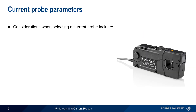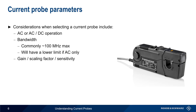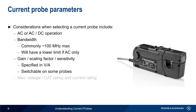There are several considerations when selecting a current probe. The first is AC-only or AC-DC operation, as we just discussed. Another important consideration is bandwidth, or the frequency range over which the current can be accurately measured — this is usually about 100 MHz or less. Probes which are AC only will also have a lower bandwidth limit. Since current probes produce a voltage proportional to the measured current, the gain, sensitivity, or scaling factor of the probe is also important. This is specified in volts per amp, and some current probes come with a physical switch that allows this scaling to be changed. The maximum voltage and current rating limit the maximum measurement value and can also be relevant for safety considerations.